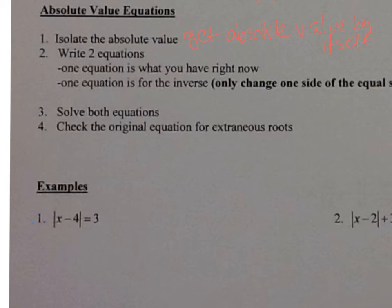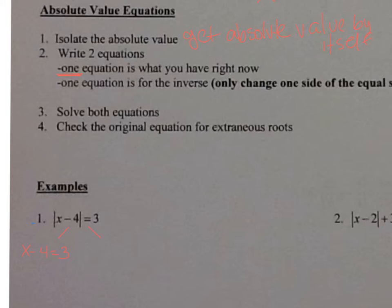You only change one side of the equal sign. I'll branch mine off like this and write x minus four equals three as the first equation. For the inverse equation, x minus four stays the same, but I change the right side to its opposite — so three becomes negative three.